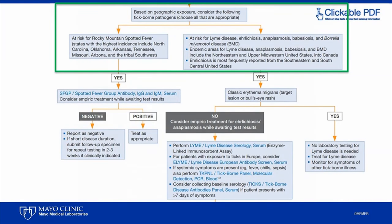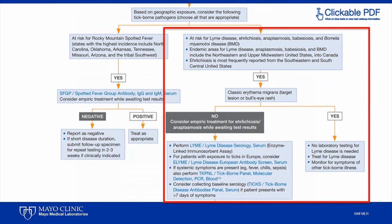The next step in our algorithm is to determine if the patient is at risk for Rocky Mountain spotted fever, as shown on the left in the green box, or the other tick-borne diseases shown on the right. Depending on the patient's residence and exposure history, he or she may be at risk for both groups of diseases. In this case, our patient's potential tick exposure is in Connecticut, and he is therefore at risk for Lyme disease, anaplasmosis, babesiosis, and Borrelia miyamotoi disease. We will therefore be following the arm of the algorithm shown in the red box.